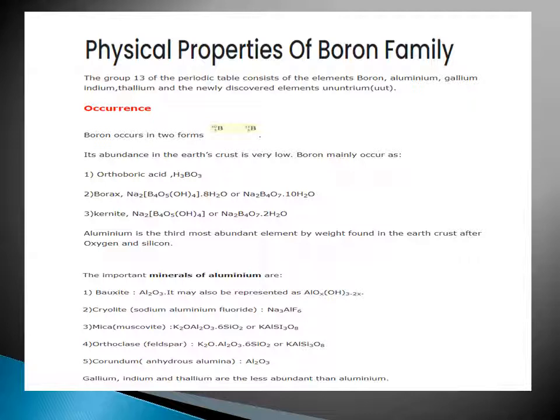Boron occurs in two forms: boron-10 and boron-11. Its abundance in the earth's crust is very low. Boron mainly occurs as orthoboric acid, borax, and kernite.